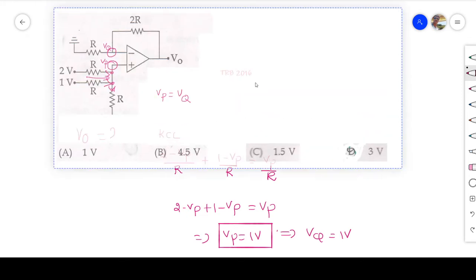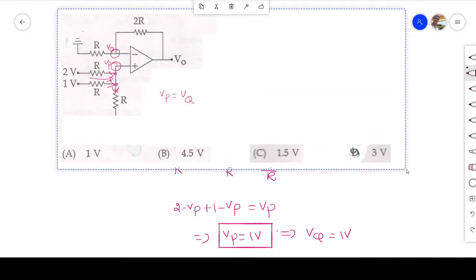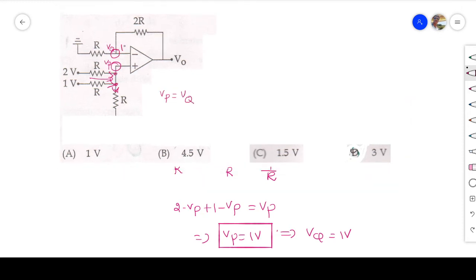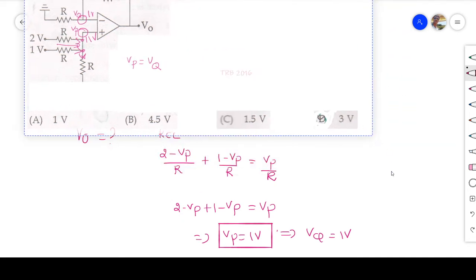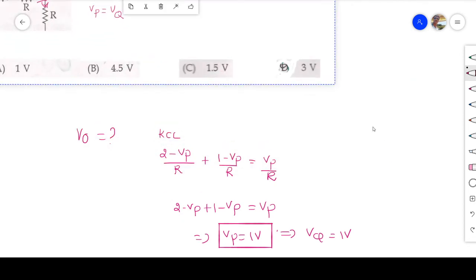Both the terminals are having a voltage of 1 volt. Here also 1 volt, here also 1 volt. Now what I have to find, I have to find V_O. Please bear with me.